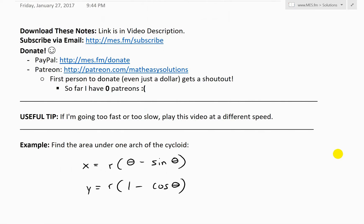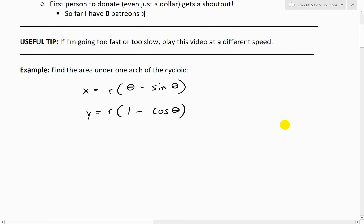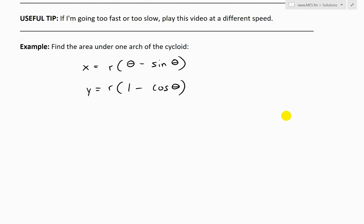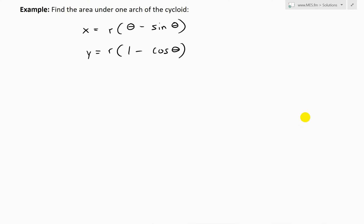In this example, we'll look at finding the area under one arch of the cycloid, given the parametric equations x equals r times (theta minus sine theta) and y equals r times (1 minus cosine theta). Recall these are just the parametric equations for a cycloid — links are in the description below.